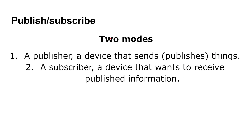There are two modes inside MQTT, and these are very important. There's the publisher — a device that sends, that publishes things. And there's a subscriber — a device that wants to receive that information. Just like in real life: you have a magazine publisher, a newspaper publisher, or a website publisher, and we are subscribers, viewers, readers of those things.